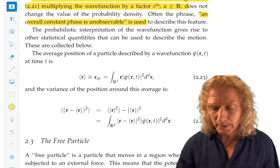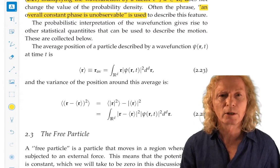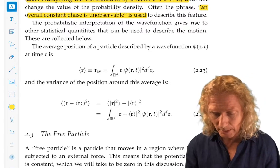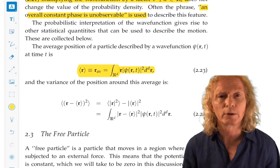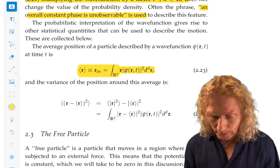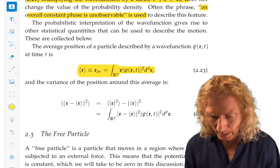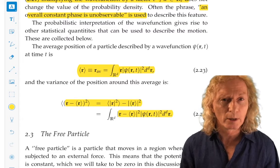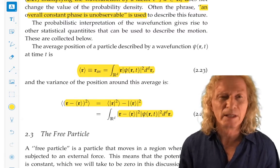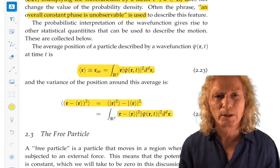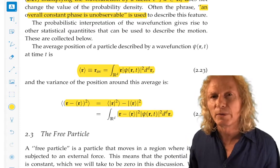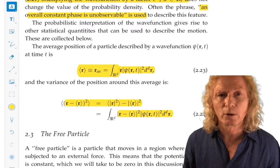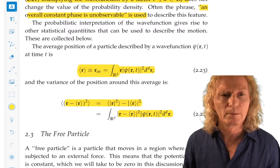Once we have a probability density, then we can talk about a variety of other statistical quantities. We can talk about the average position of the particle. We can talk about the variance of the position about this average. These are very interesting quantities. We will meet them again in the next chapter, but we will deal with them in very specific physical examples. This probabilistic interpretation is going to underlie the rest of this chapter also.